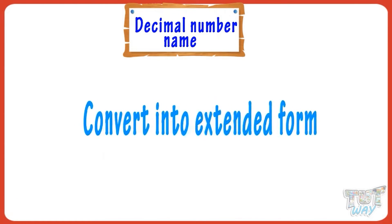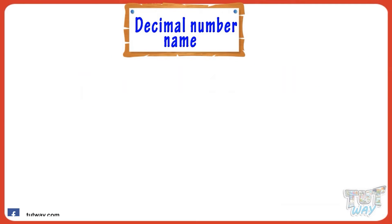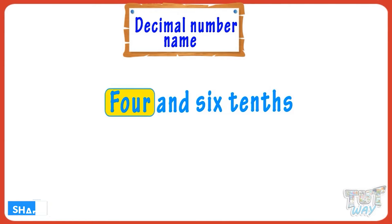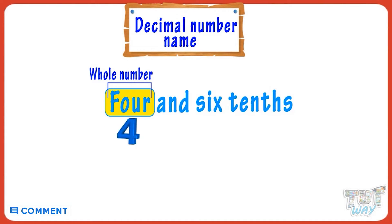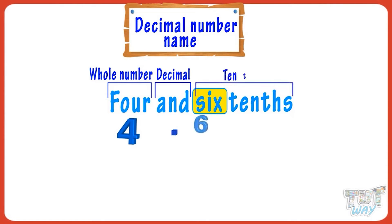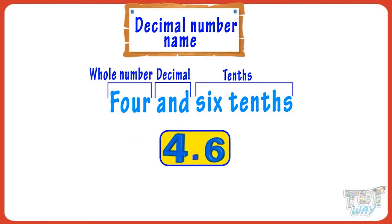Now we are given a decimal number name, and we have to convert it into its standard form — that is, four and six tenths. The number before 'and' is a whole number; just write it as it is: it is four. 'And' stands for decimal point, so put a decimal point in place of 'and.' Six tenths means six is the first digit after the decimal point, so we will write it as four point six.